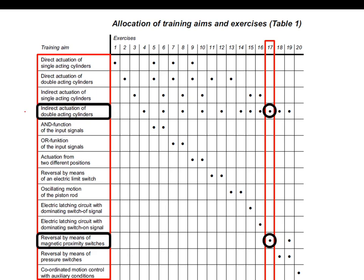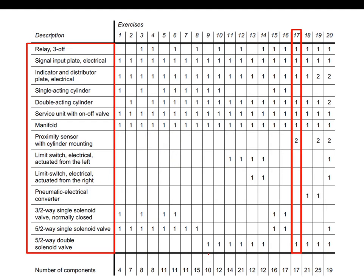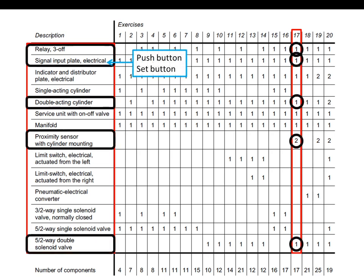Let us look at the training aims. We need to learn how to use indirect actuation of double acting cylinder, reversal of piston motion via magnetic proximity switches, and as for the components required for this experiment...